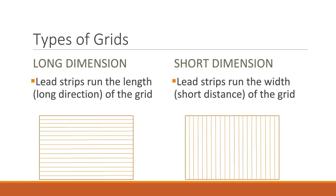Grids can also vary in the direction the grid strips run. A long-dimension grid is the most common grid and the lead strips run the length or long direction of the grid. A short-dimension grid is one in which the lead strips run the short distance or width of the grid. Short-dimension grids are useful in landscape mobile chest radiography on larger patients since the angle of the central ray is often not able to be perpendicular to the gridded image receptor but instead angled downward or caudal. This caudal angle will work with the lead strips rather than against the lead strips.